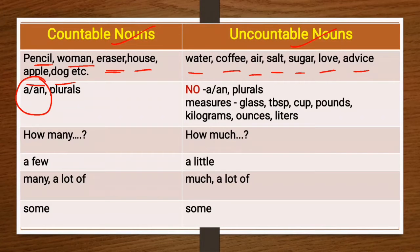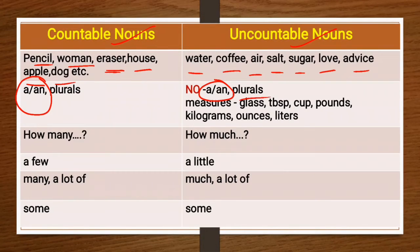With uncountable nouns, we cannot use articles A or AN, and we cannot make their plurals either. We never say 'waters,' 'airs,' or 'oils.' We say 'oil floats on water.' But we can use quantity expressions to talk about uncountable nouns.